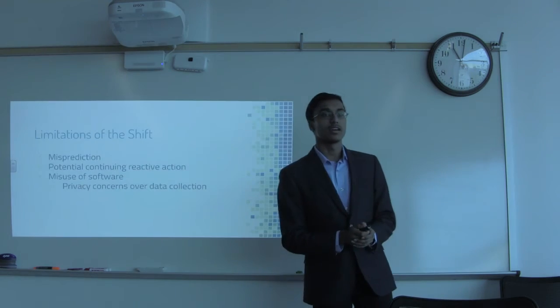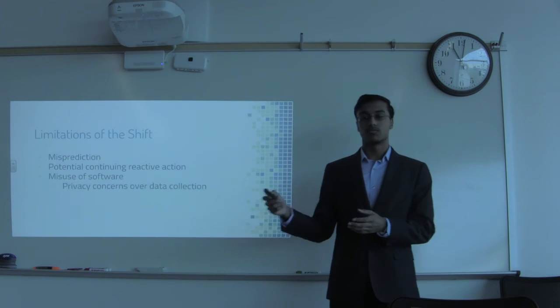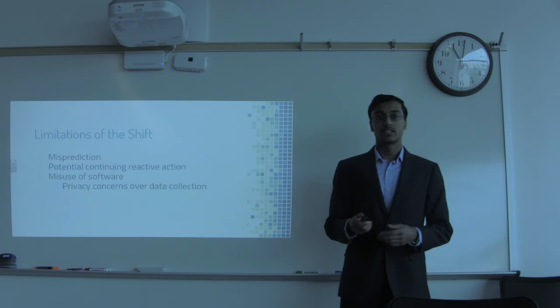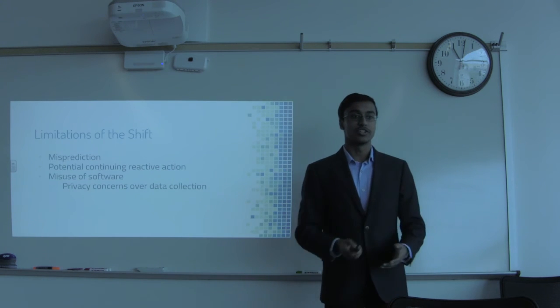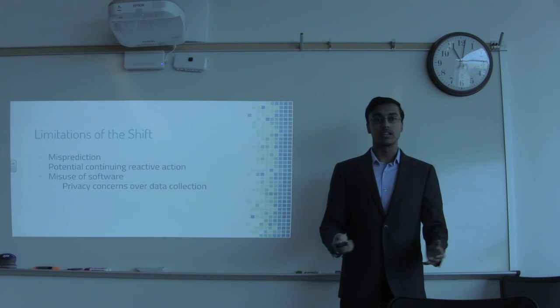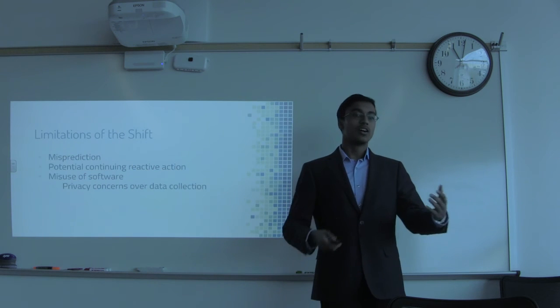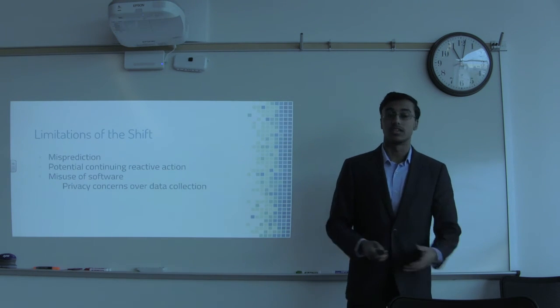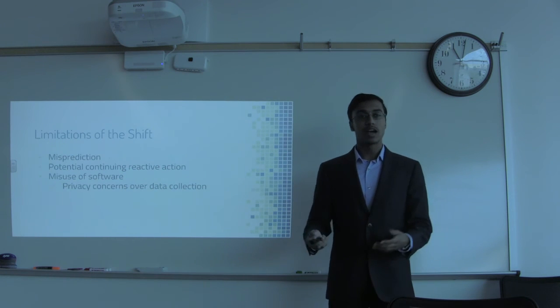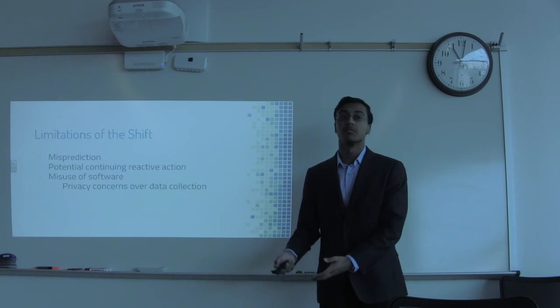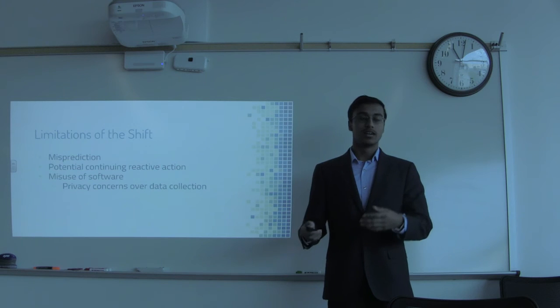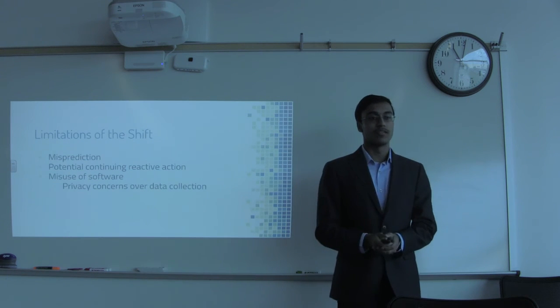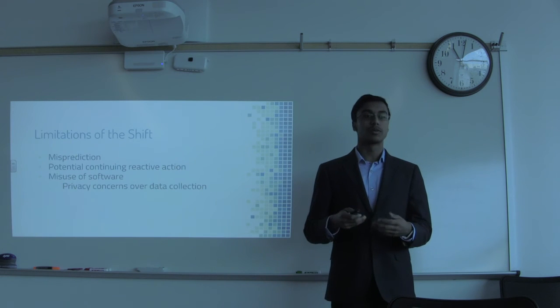And so, like anything, this shift from reactive to proactive action has some limitations. And so the first major limitation is misprediction. Obviously, if we predict something incorrectly, if our data isn't sufficient, if our analysis doesn't work correctly, if someone uses analysis incorrectly, then we will still have to resort to reacting to whatever problem happens. We obviously can't predict human error. And so if something like that happens, we still have to react rather than we won't be able to prevent.